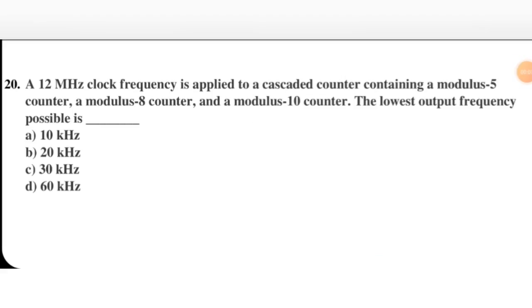Next question: a 12 megahertz clock frequency is applied to a cascaded counter containing a mod 5 counter, a mod 8 counter, and a mod 10 counter. Find the lowest output frequency.